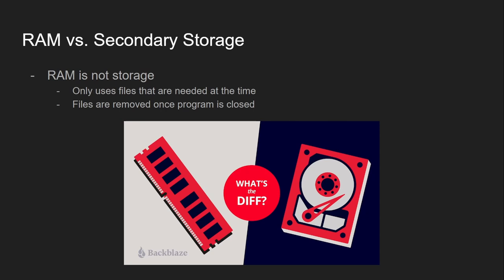It's crucial to understand the distinction between RAM and secondary storage. While RAM holds data temporarily, the storage of files, applications, and other data is handled by secondary storage devices like hard drives or SSDs. For example, when you save a file in Microsoft Word, it's stored in secondary storage, not RAM. Closing the file deletes it from primary memory, freeing up space in RAM for new operations to be performed.